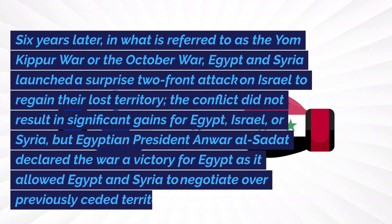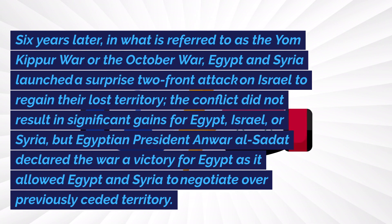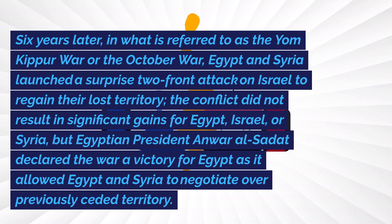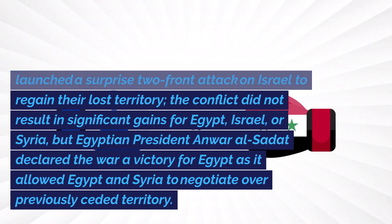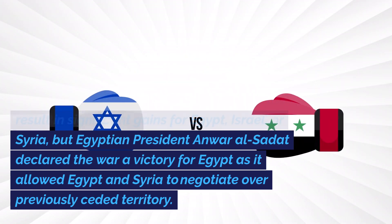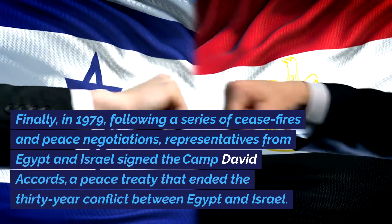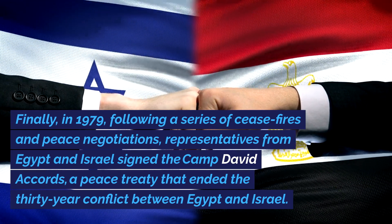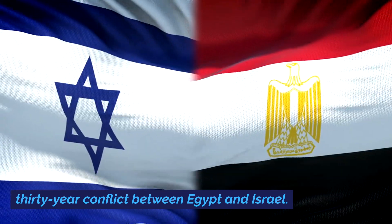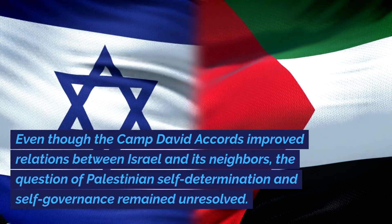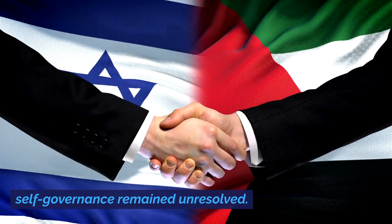Six years later, in what is referred to as the Yom Kippur War or the October War, Egypt and Syria launched a surprise two-front attack on Israel to regain their lost territory. The conflict did not result in significant gains for Egypt, Israel, or Syria, but Egyptian President Anwar al-Sadat declared the war a victory for Egypt as it allowed Egypt and Syria to negotiate over previously ceded territory. Finally, in 1979, following a series of ceasefires and peace negotiations, representatives from Egypt and Israel signed the Camp David Accords, a peace treaty that ended the 30-year conflict between Egypt and Israel. Even though the Camp David Accords improved relations between Israel and its neighbors, the question of Palestinians' self-determination and self-governance remained unresolved.